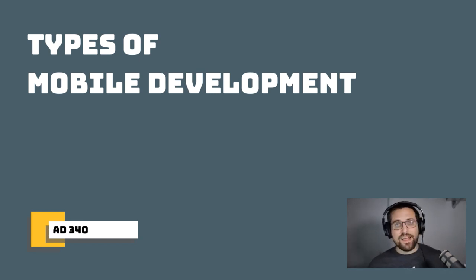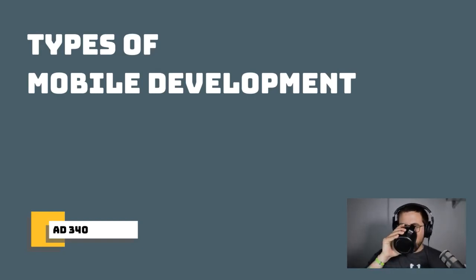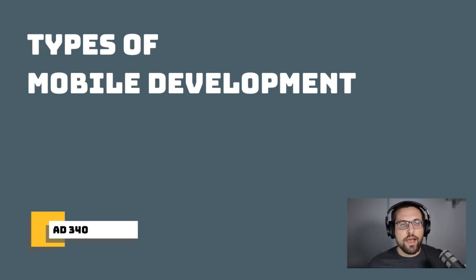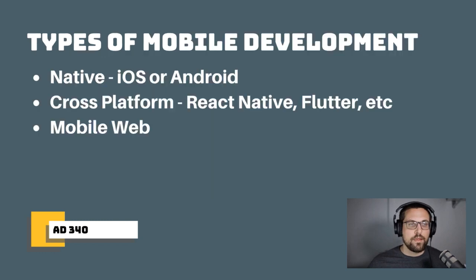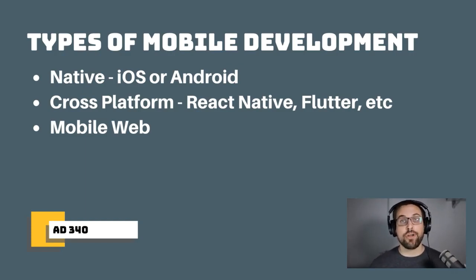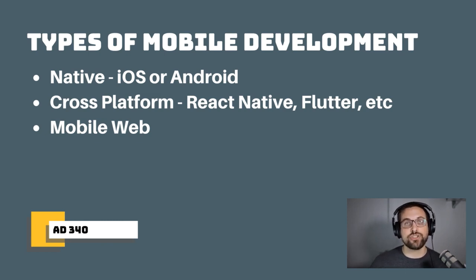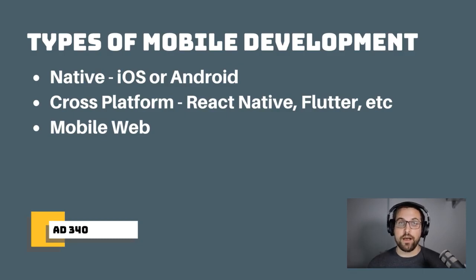Now I want to talk about the different types of mobile app development — really the different technologies used to build them. In a perfect world, any of these technologies would build an app where the user experience is transparent to users; ideally users shouldn't be able to tell what technology you used. However, that's often not the case. The three main types are native app development, cross-platform development, and mobile web.